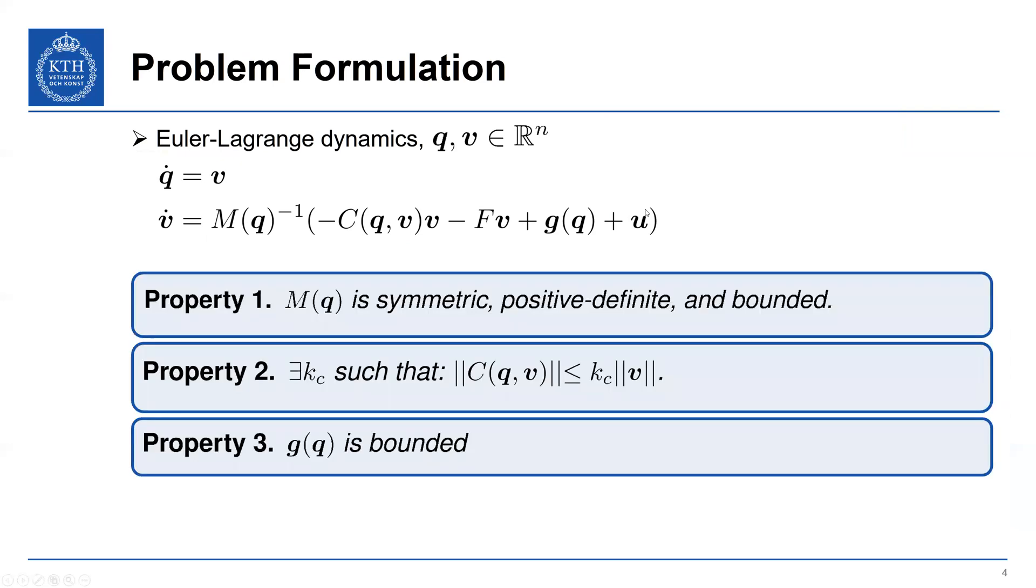I'm just going to list a few main properties, well-known properties of Euler-Lagrange systems, mainly that the inertia matrix is symmetric, positive definite, and bounded. That the Coriolis matrix is bounded as a function of the velocity and that the gravity torque is also bounded. So these bounds will be used throughout the results.